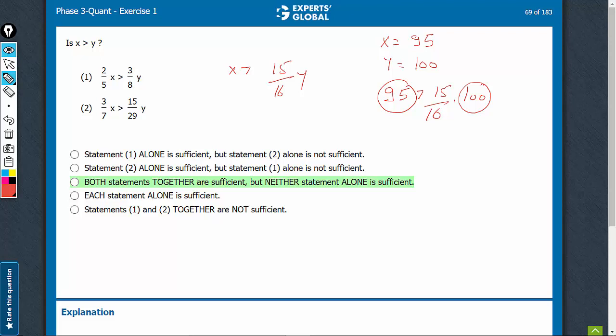For example, if x were 1000 and y is equal to 100, even for this case this would hold. In this case we would get yes as an answer. In this case we would get no. Yes and no both are possible. So statement one is not sufficient. Look at statement two.